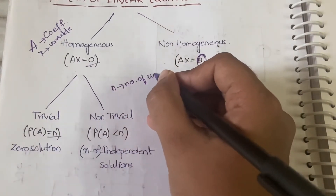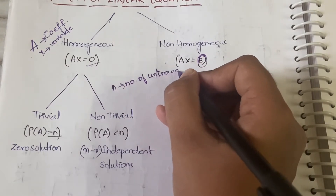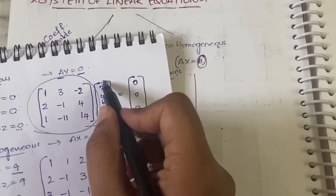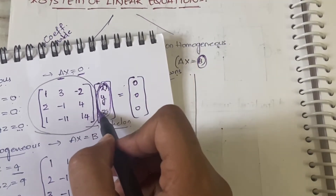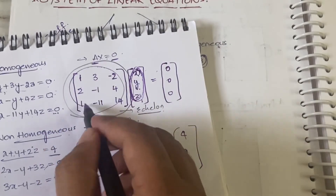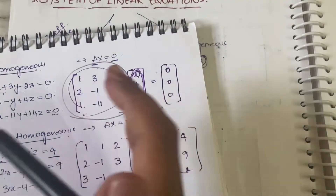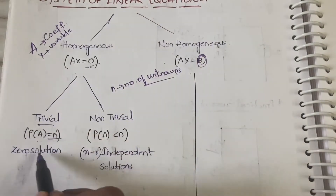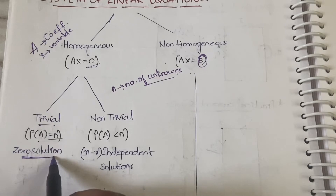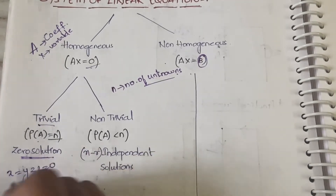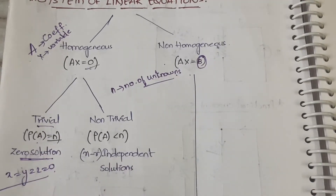In the example, x, y, z are the unknown values, so n equals three. If the rank of matrix A comes out equal to three — equal to the number of unknown values — then it is a trivial solution. The only solution is the zero solution: x equals y equals z equals zero.